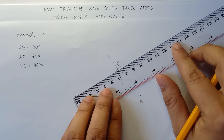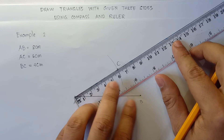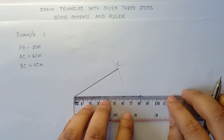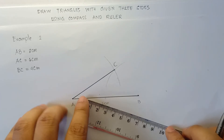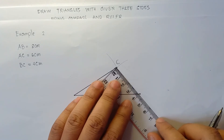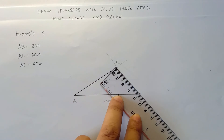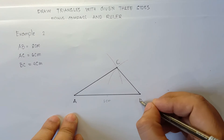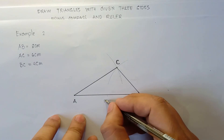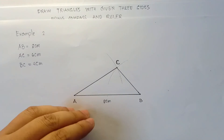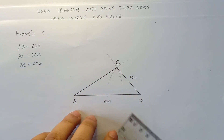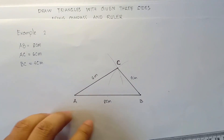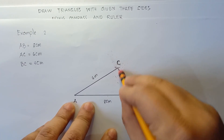Simply connect the points. Let's check: this is 6 centimeters — exactly 6 centimeters. We can sketch this with a ball pen to finalize our answer. This is 8 centimeters, and this will be 4 centimeters for side BC — exactly 4 centimeters. We can label the points: point A, point B, point C. AB is 8 centimeters, BC is 4 centimeters, and AC is 6 centimeters. All set! You can simply erase the guide arcs.